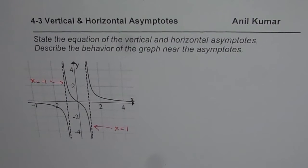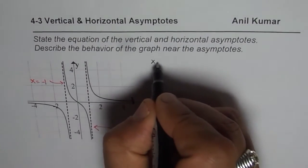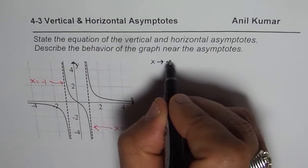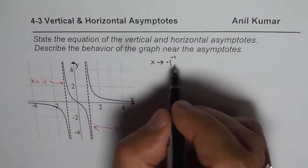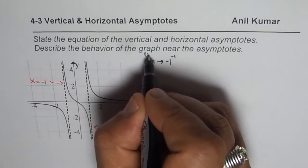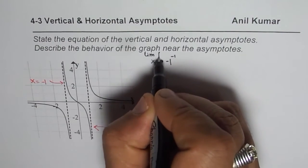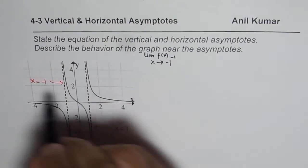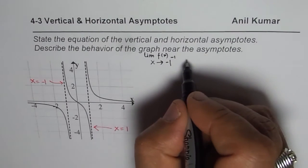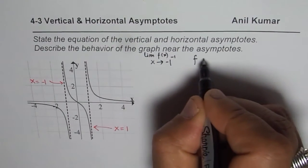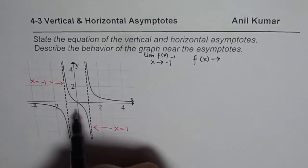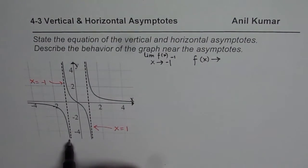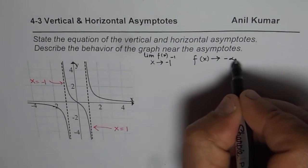As x approaches minus 1 from the negative side — in limit language, we can say the limit of the function f(x) as x approaches minus 1 from the left side — the function f(x) approaches negative infinity. Do you see that? It approaches negative infinity.